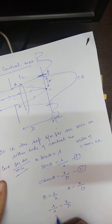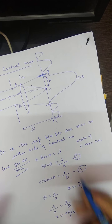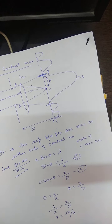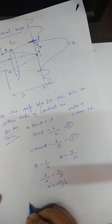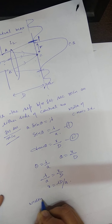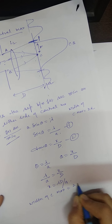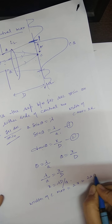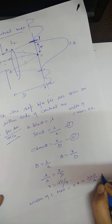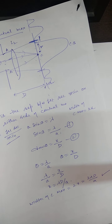Therefore x = λD/a. The width of central maxima is 2x, which gives us: width of central maxima = 2λD/a.